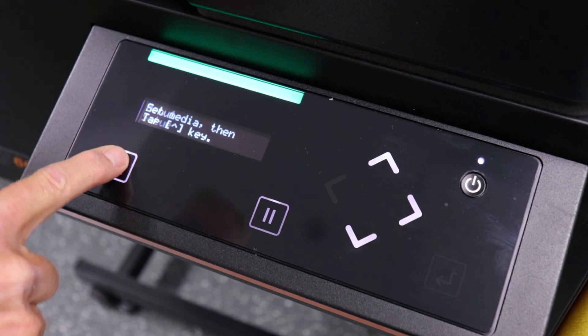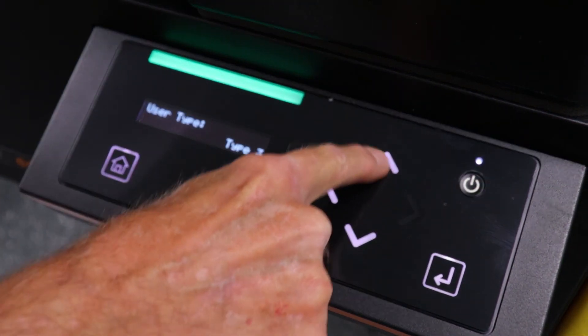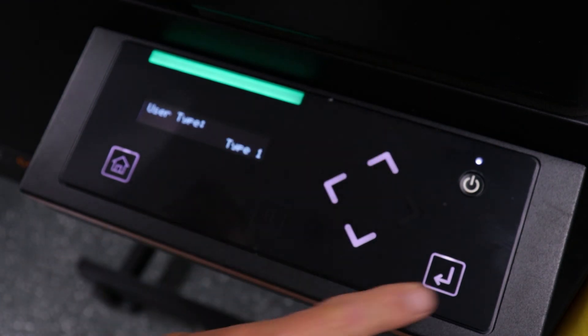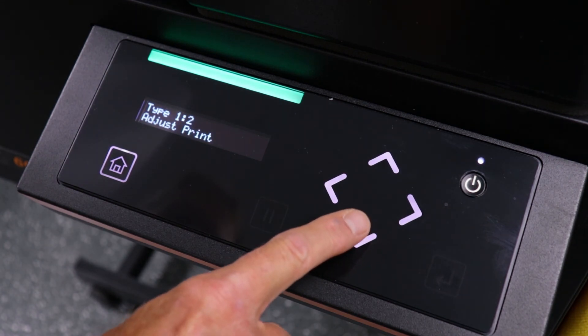Start by pressing the Home key. Press the right arrow key on Setup, then the right arrow key again on User Type. We want to start on User Type 1, so scroll up to User Type 1 and press the right arrow key. Now let's scroll down to Media Setting and press the right arrow key again.